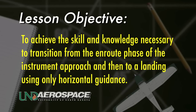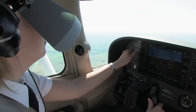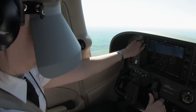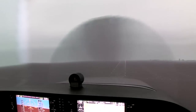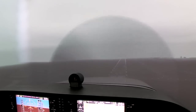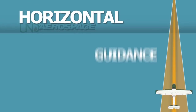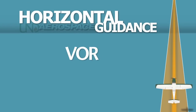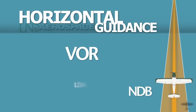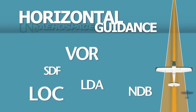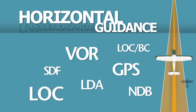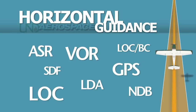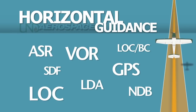In this video, the airplane will be flown from cruise flight to a point where a safe visual landing can be made using only the horizontal guidance provided by a VOR, NDB, LDA, SDF, localizer, localizer back course, GPS, or airport surveillance radar.